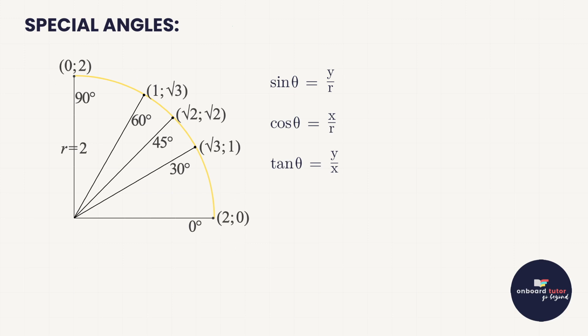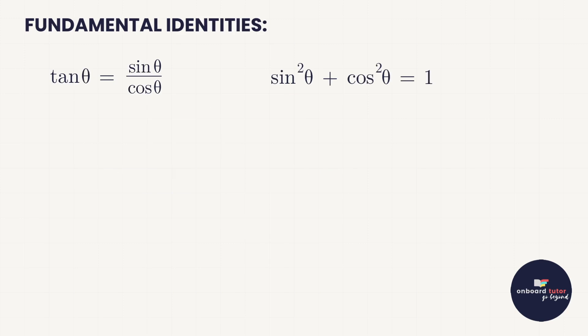Thanks to the diagram and trig graphs, we've also seen that 0 and 90 are special angles. For example, if you needed cos of 45, you go to the 45-degree line, take the x-coordinate root 2 over the r-value of 2, giving root 2 over 2 — solving without a calculator.